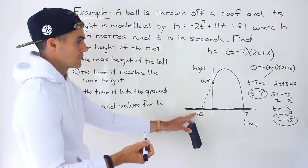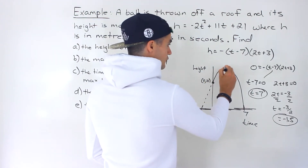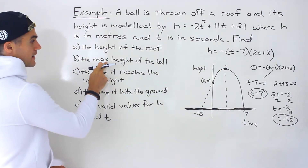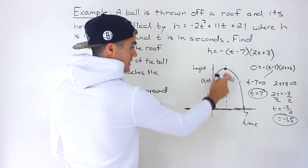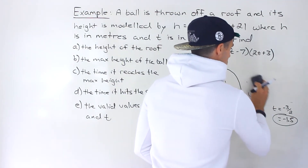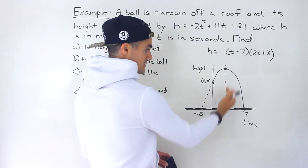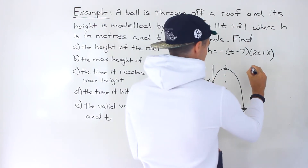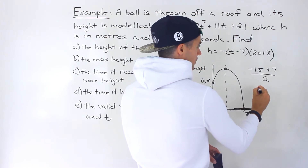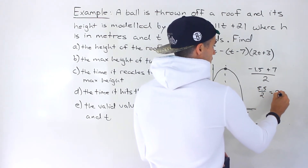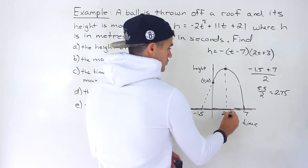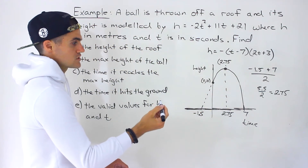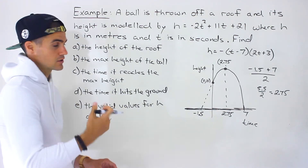We're going to use both intercepts to find the axis of symmetry — the t value of the vertex. We add the two intercepts and divide by two: negative 1.5 plus 7 equals 5.5, divided by 2 gives 2.75 seconds. So the axis of symmetry is at t equals 2.75 seconds. That's the t coordinate of the vertex, and it's also the answer to part c — the time the ball reaches its maximum height.